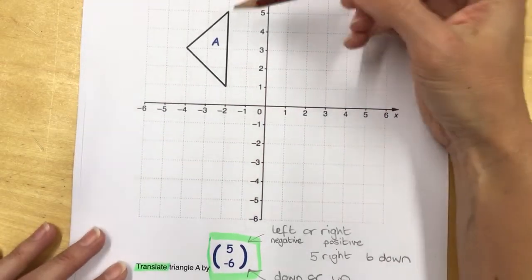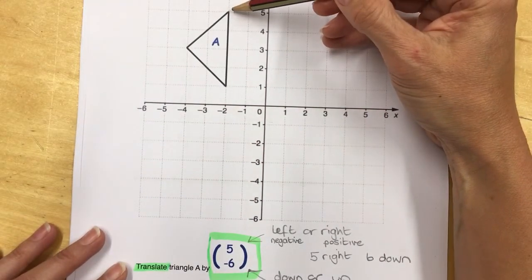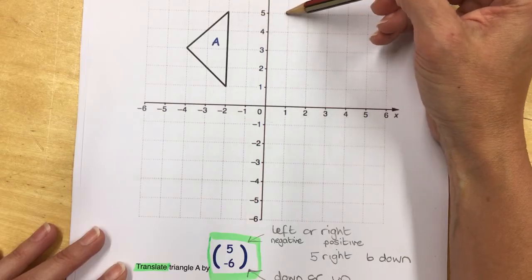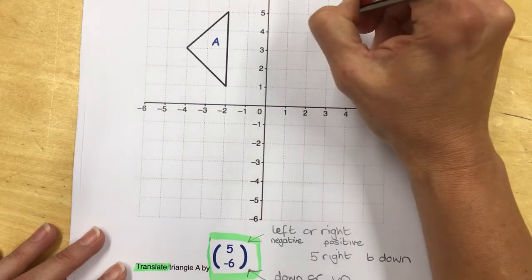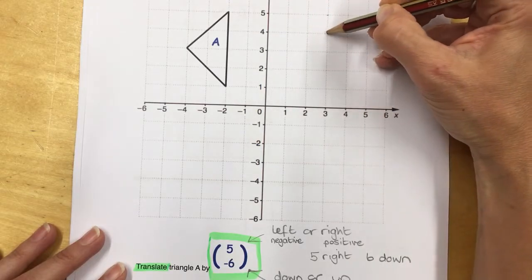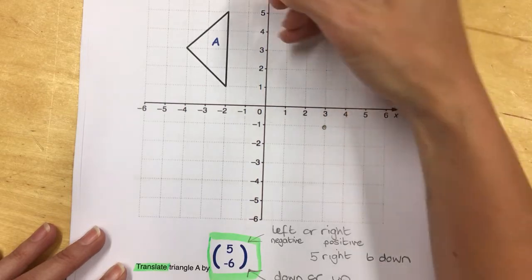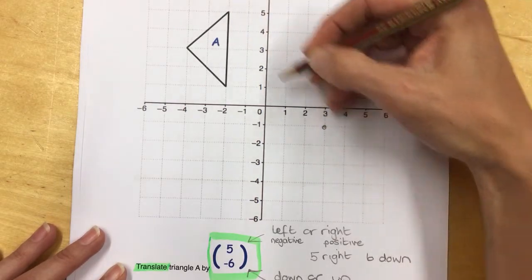We take the shape and choose a point. It needs to go five to the right—one, two, three, four, five—and then six down—one, two, three, four, five, six. That is the corresponding point.